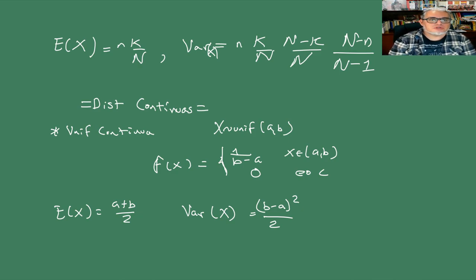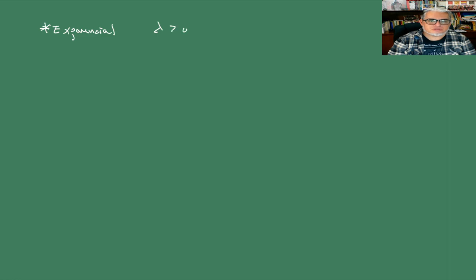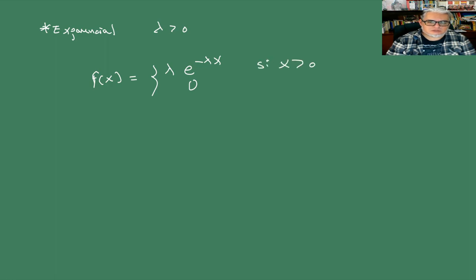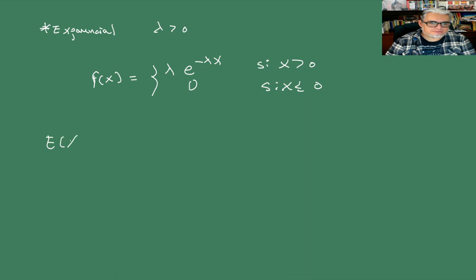La exponencial con parámetro lambda positivo tiene densidad lambda por e a la menos lambda x, si X es mayor que 0, y 0 si X es menor o igual que 0. La esperanza es 1 sobre lambda y la varianza es 1 sobre lambda cuadrado.